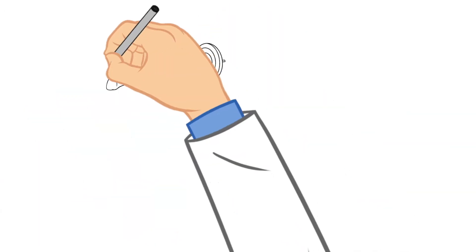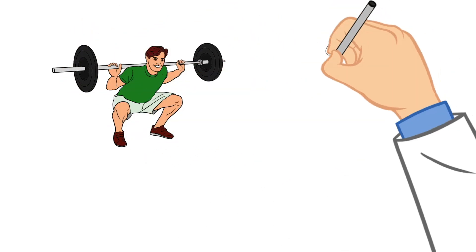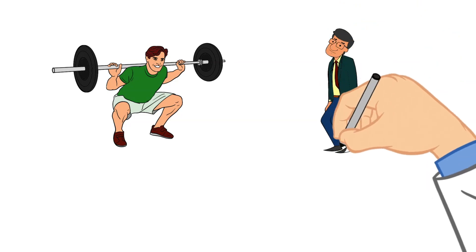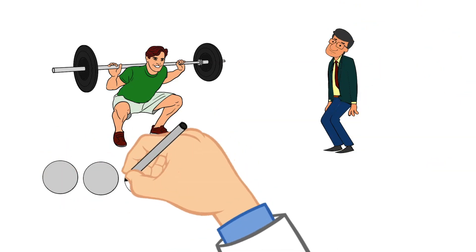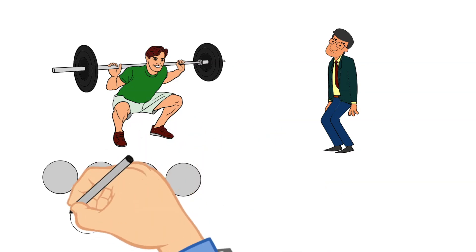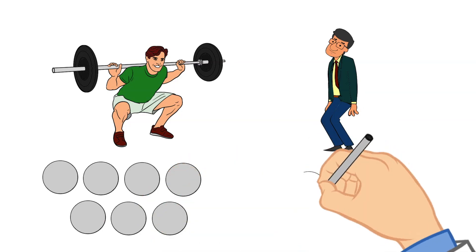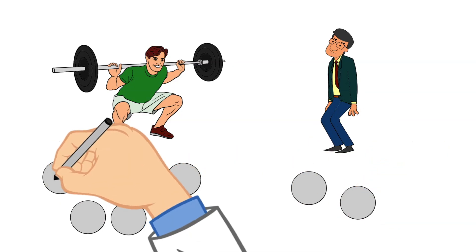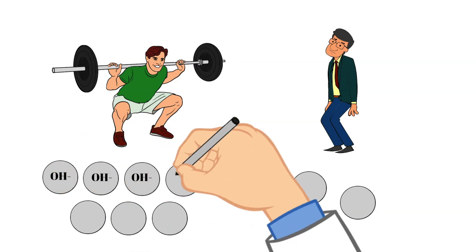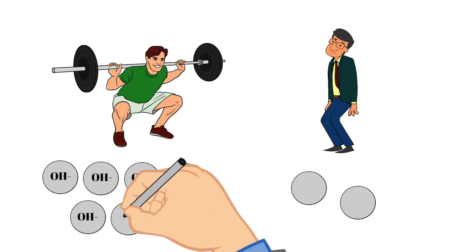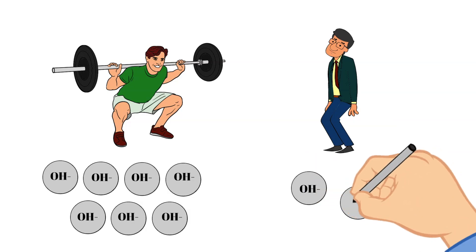So just like acids, bases can also be strong or weak depending upon how many hydroxide ions there are in the solution. The more hydroxide ions, the stronger the base. The less hydroxide ions, the weaker the base. So just like acids, strong bases such as sodium hydroxide break apart completely. There are no more sodium hydroxide atoms in the solution. Whereas only a small amount of weak base molecules will break apart when dissolved in water.